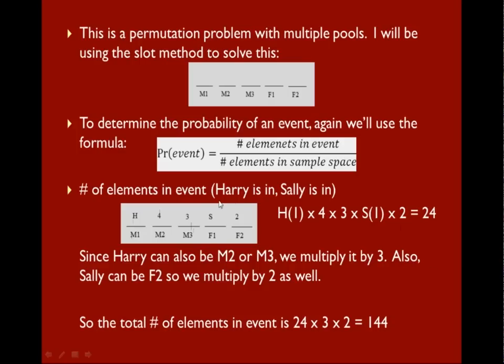In the same way, Sally can also be female role 2, so we're going to multiply the entire thing by 2 as well. This accommodates the fact that Sally can be female role 2 and the other female can be female role 1. So the total number of elements in the event is 24 times 3 times 2, which is 144.